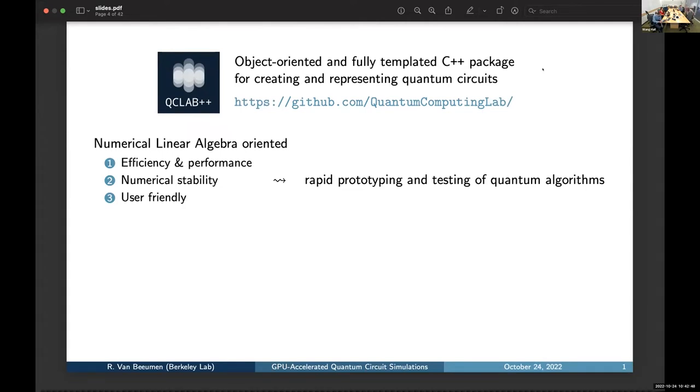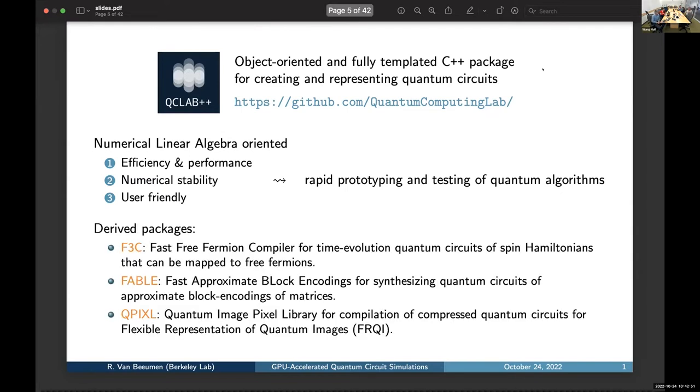We also have a MATLAB component, if you are interested in that. And QCLab++ is the backbone of several other packages developed here at Berkeley Lab. For example, F3C, the fast free fermion compiler for time evolution quantum circuits of spin Hamiltonians that can be mapped to free fermions. The FABL package, which is for fast approximate block encodings for synthesizing quantum circuits of approximate block encodings of matrices, and then 2PiXL, which stands for the quantum image pixel library, which can be used for compiling compressed quantum circuits for, for example, the flexible representation of quantum images.